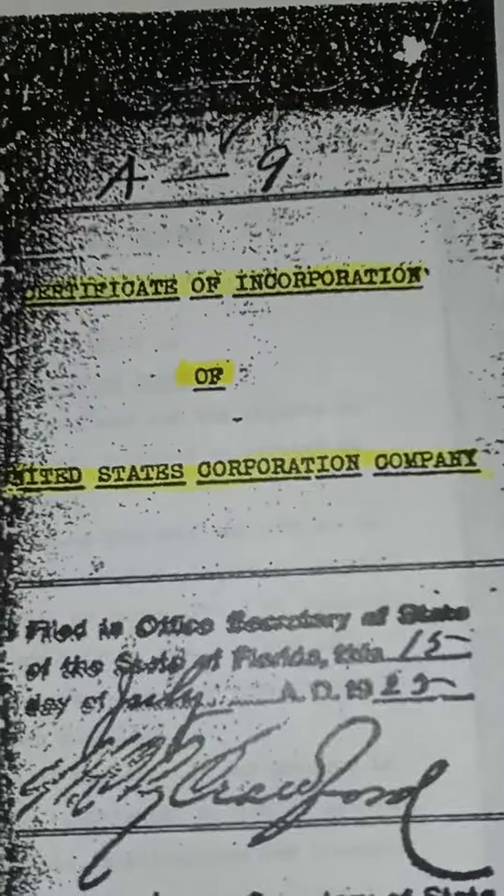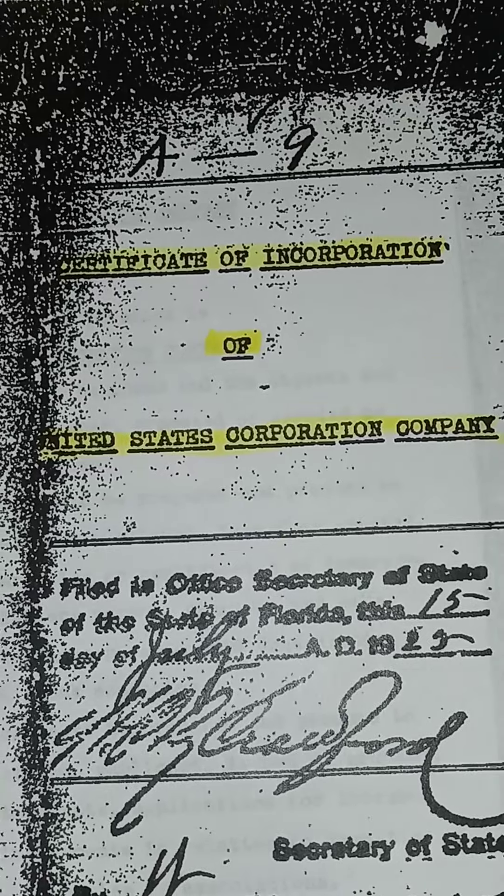This is the article of incorporation. This is the United States government incorporation document, right here, certificate of incorporation of the United States company.